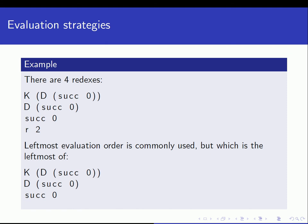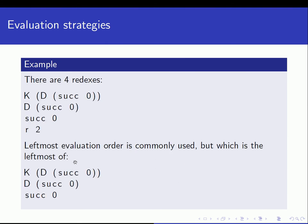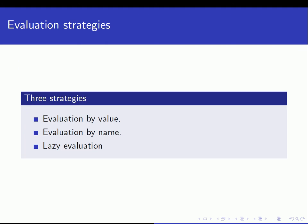Leftmost evaluation order is commonly used in functional programming languages. But the question is which is the leftmost of these? r of two is definitely not leftmost. So the question is which of the three - k d of successor zero, d of successor zero, or successor zero - is the leftmost. How do we proceed when trying to obtain a value? There are three strategies: evaluation by value, evaluation by name, and lazy evaluation.